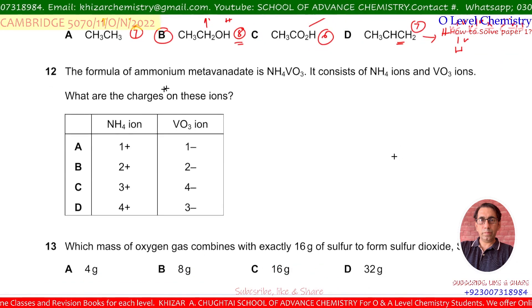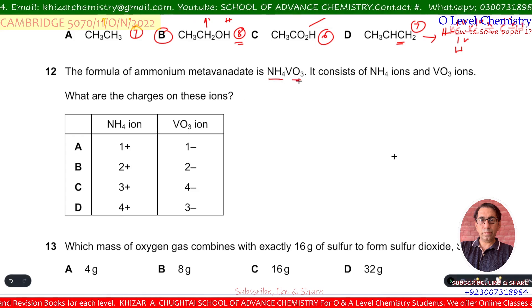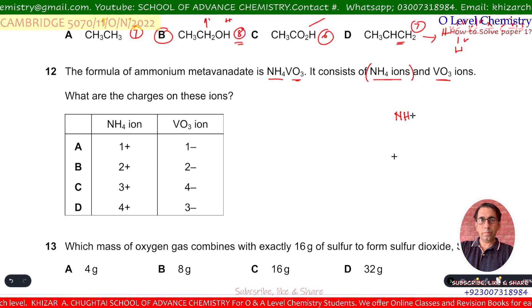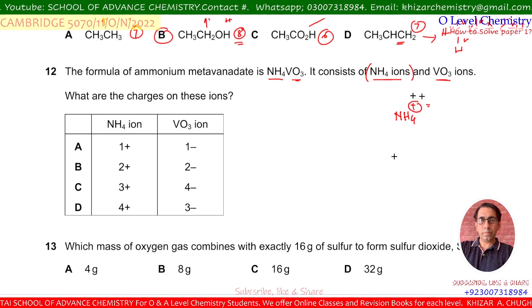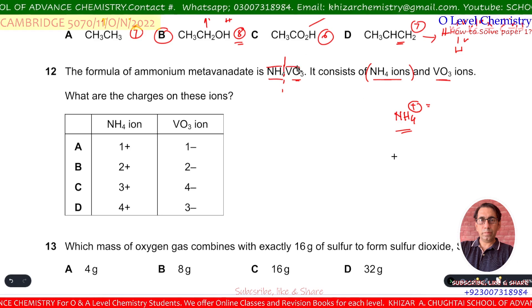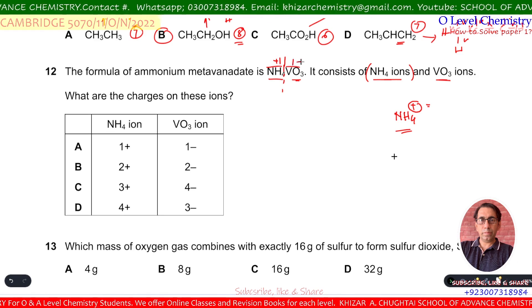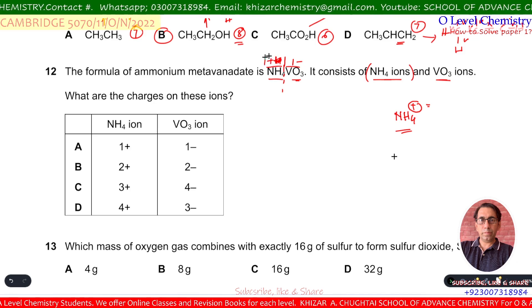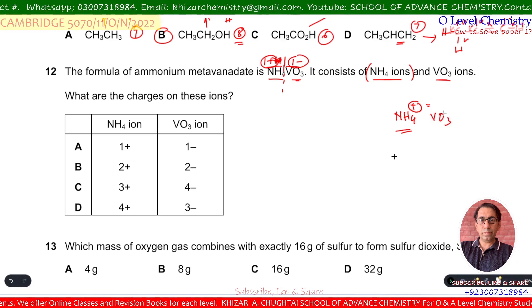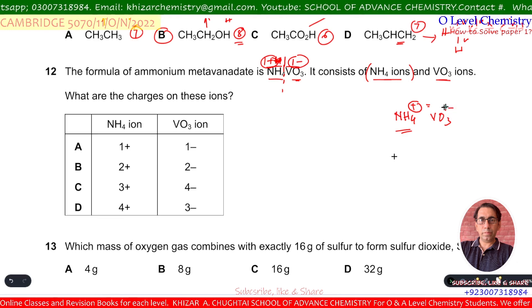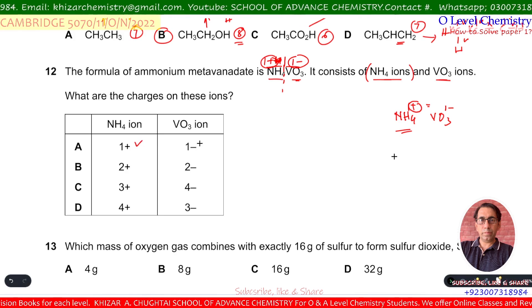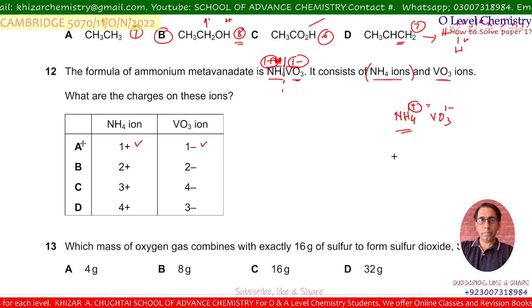Question number 12. The formula of ammonium metavanadate is NH₄VO₃. It consists of ammonium ion and vanadate ion. The ammonium ion has a 1+ charge, so the vanadate ion VO₃ must have a 1− charge to balance. The charges are: ammonium +1 and VO₃ −1. A is the correct option.